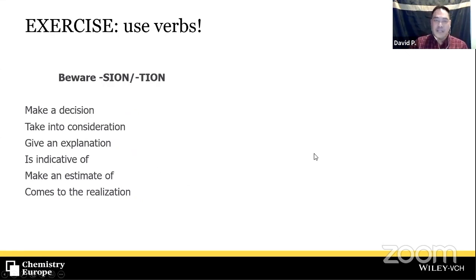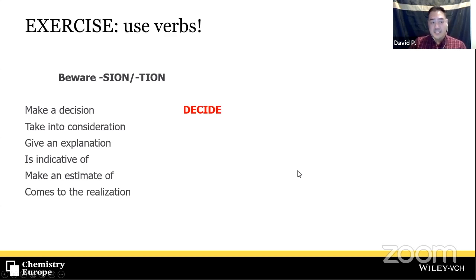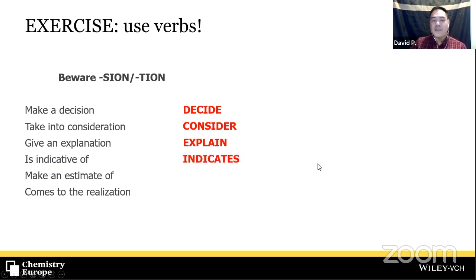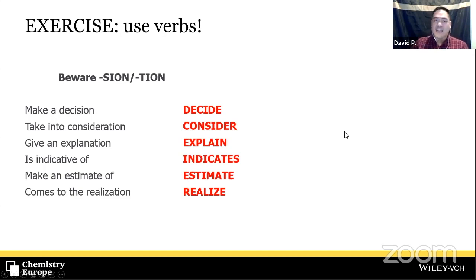A good practice many writers push is to use verbs. Verbs are the juicy, sexy parts of language because they denote action — there's movement. Beware of using nouns when you can use verbs. This often happens with '-sion' or '-tion' words. Instead of 'make a decision,' say 'decide.' Instead of 'take into consideration,' say 'consider.' 'Give an explanation' becomes 'explain.' 'It is indicative of' becomes 'it indicates.' 'Make an estimate of' becomes 'estimate.' 'Come to the realization' becomes 'realized.' Use verb forms whenever you can — put the action in your sentences.